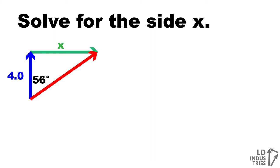Here's an example. We've got a triangle, and we're going to solve for the side x. We know one side of the triangle is 4.0 units long, and we know the angle down there is 56 degrees.